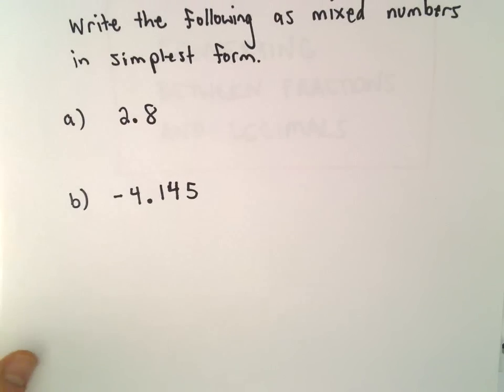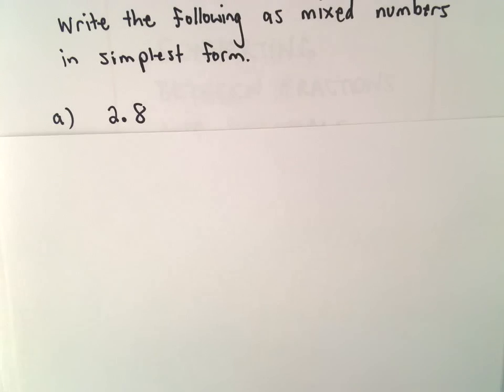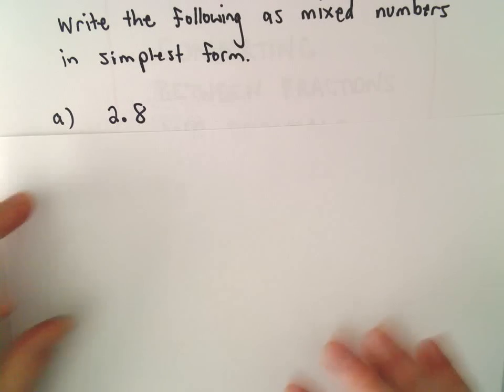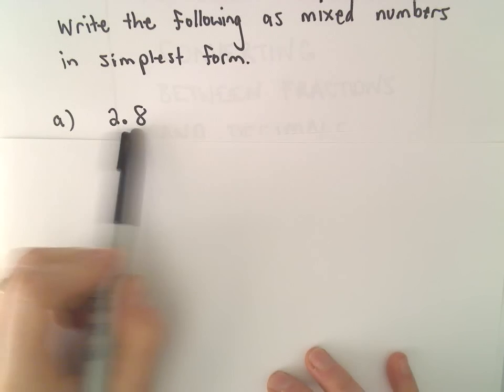Okay, here we're going to do some examples of writing decimals as mixed numbers, and we'll reduce the fractions that are left over. And again, we do this the exact same way as simply writing any decimal as a fraction.